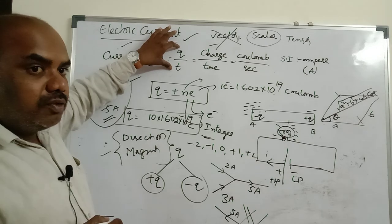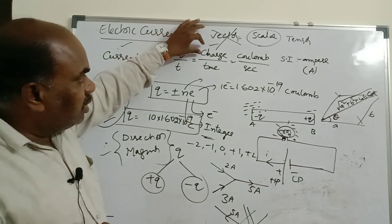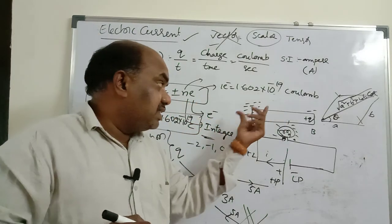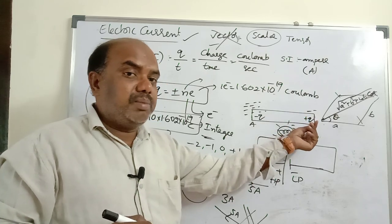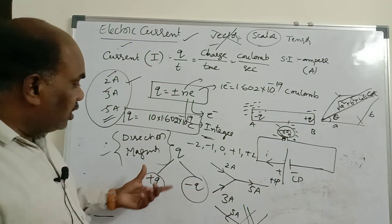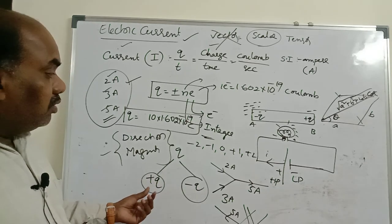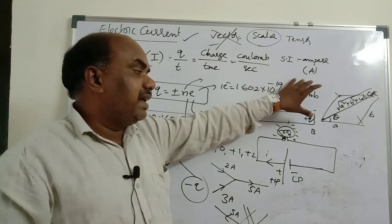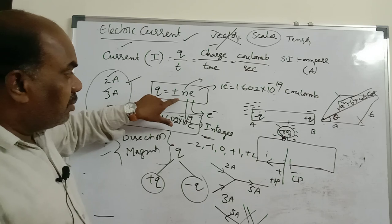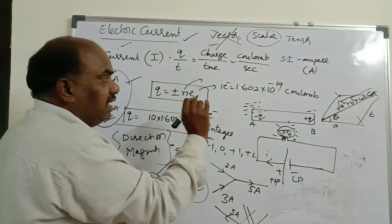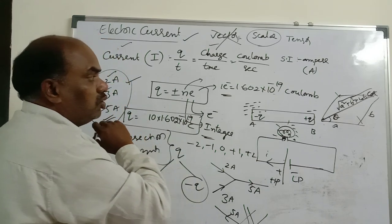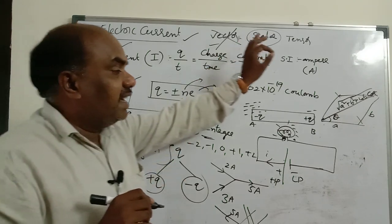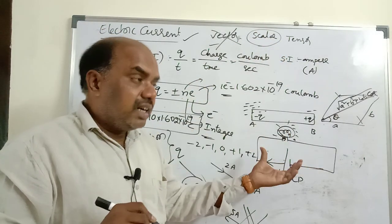To summarize: current is denoted by I, is the rate of flow of charge, and is a scalar quantity. SI unit is ampere, denoted by capital A. Charge formula is Q = ±NE, where N is integer and E is electron charge of 1.602 × 10⁻¹⁹ coulombs. Even though current has both magnitude and direction, it is scalar because it does not obey vector laws of addition.